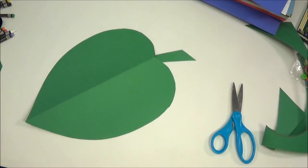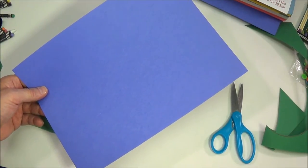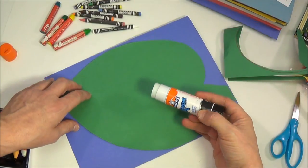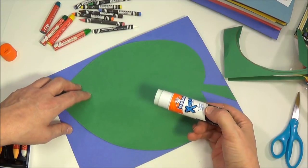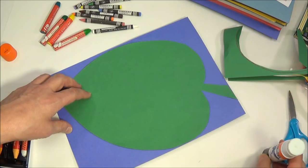It'll look something like that. Pick a dark color of construction paper for the background - dark blue works good. With a glue stick, glue the leaf to the background sheet and color in the leaf and stem details with crayons.